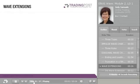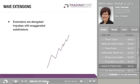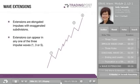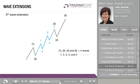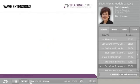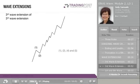When the impulse wave seems to go on and on, it is called an extension. Extensions are elongated impulses with exaggerated subdivisions. Extensions can appear in any one of the three impulse waves — 1, 3, or 5. However, Wave 3 extensions are the most common, since it is usually the strongest and the longest impulse wave of the three. In this example, the third wave extension is a 9-wave sequence. Within this 5-wave sequence, Wave 3 extends into another 5-wave sequence. In another example, the third wave has two extensions — a third-wave extension of a third-wave extension, meaning the extension occurs within an extension.